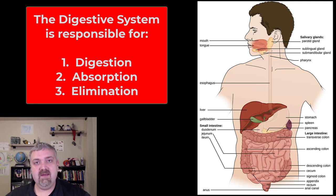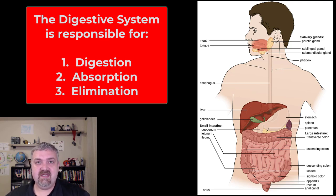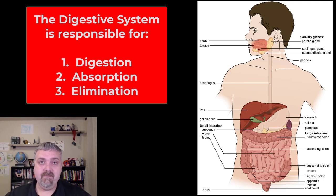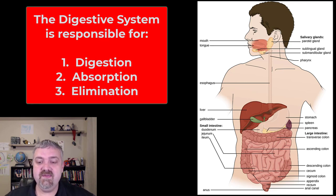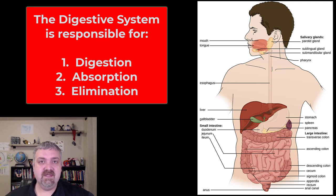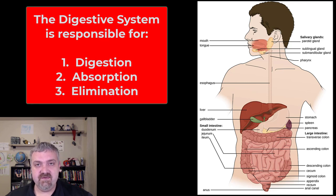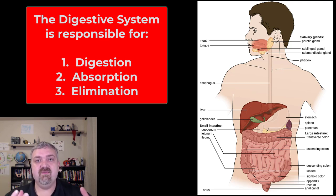And then we eliminate what we can't use. So really, the three steps of the digestive process would be digestion, absorption, and elimination. Then once these things are absorbed into our body, that's where your metabolism takes over and takes these building blocks that you've broken down from your food and extracts energy from them. So now we have energy to do work, and we have the raw materials we need to do it.